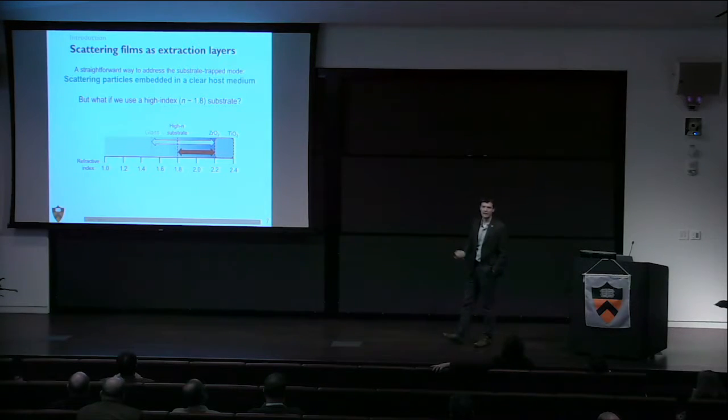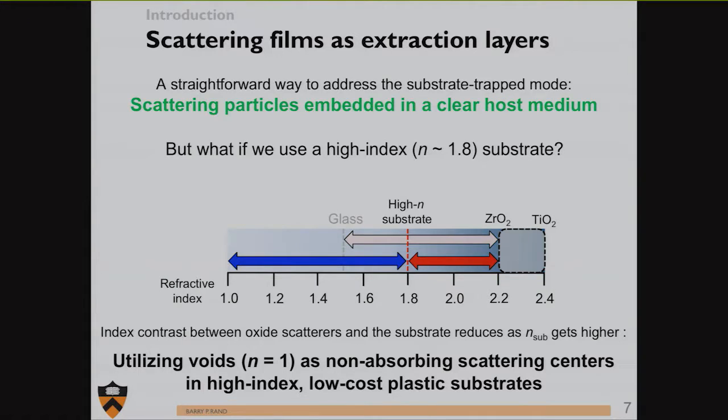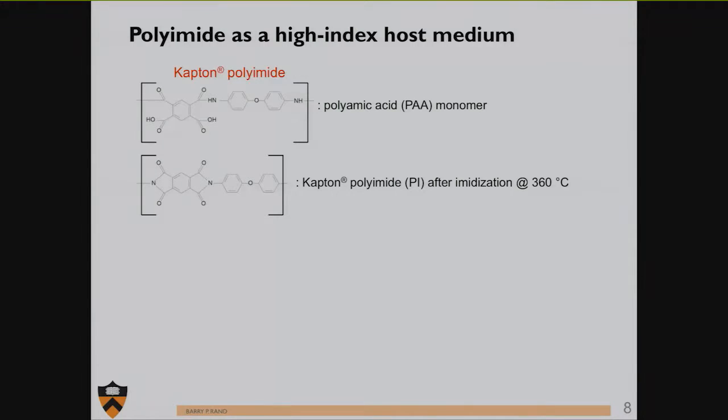But what if we want to work with a flexible substrate? I showed this flexible substrate emitting light, that's what we eventually want to do. Flexible substrates made from plastics have higher indices of refraction than glass. So the contrast between high index scatterers and high index flexible substrate has reduced. We thought, why don't we flip this on its head and instead of impregnating with high index materials, let's use low index materials. The best low index material we know is air, with an index of one and no absorption.